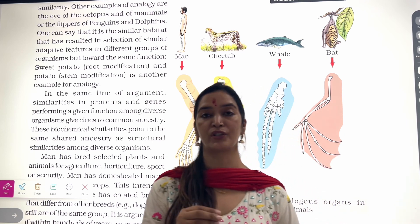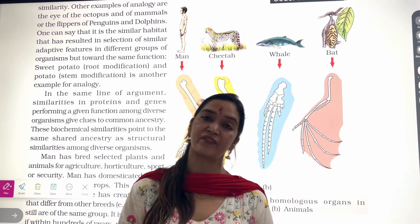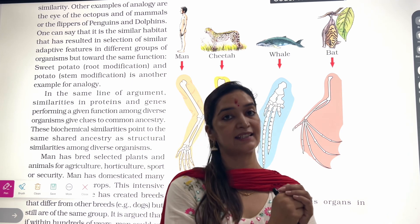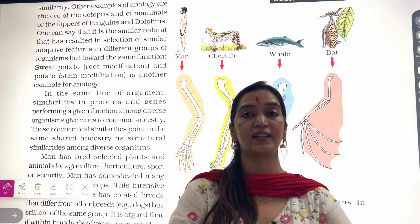If we talk about evolution, it gives the idea of divergent evolution that there is a common ancestor. Ancestor was one and there were many descendants.